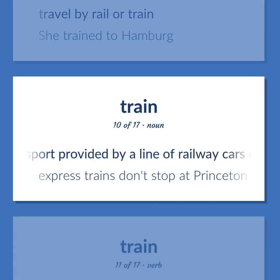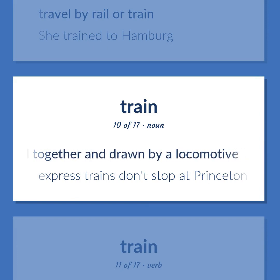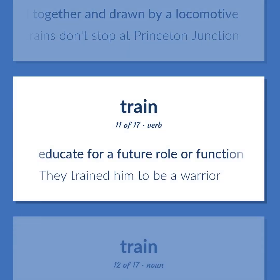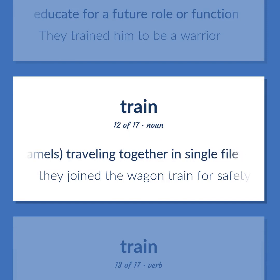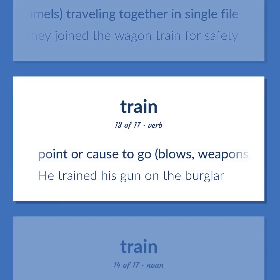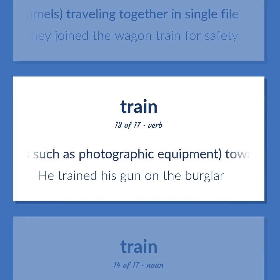Train: public transport provided by a line of railway cars coupled together and drawn by a locomotive — 'Express trains don't stop at Princeton Junction.' Educate for a future role or function — 'They trained him to be a warrior.' A procession of wagons or mules or camels traveling together in single file — 'They joined the wagon train for safety.' Point or cause to go — blows, weapons, or objects such as photographic equipment — towards a target — 'He trained his gun on the burglar.'